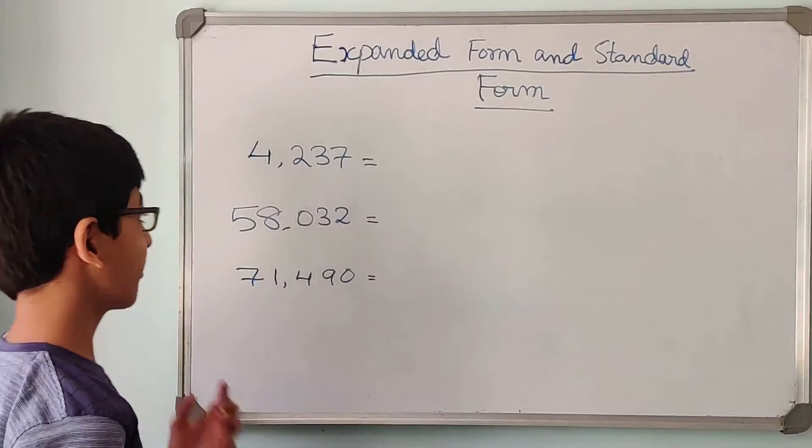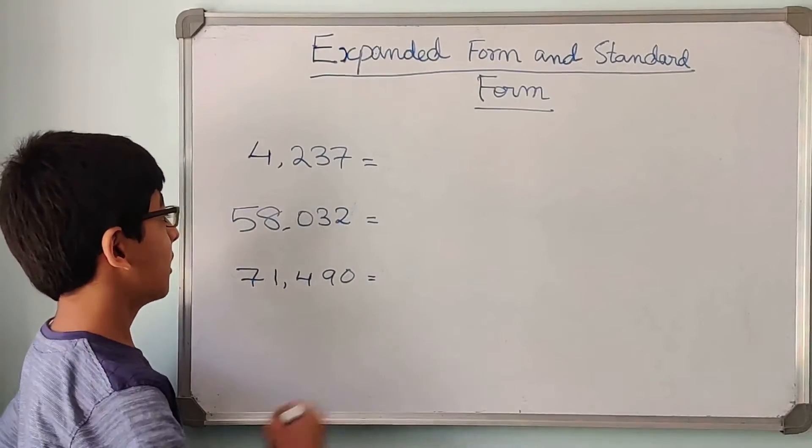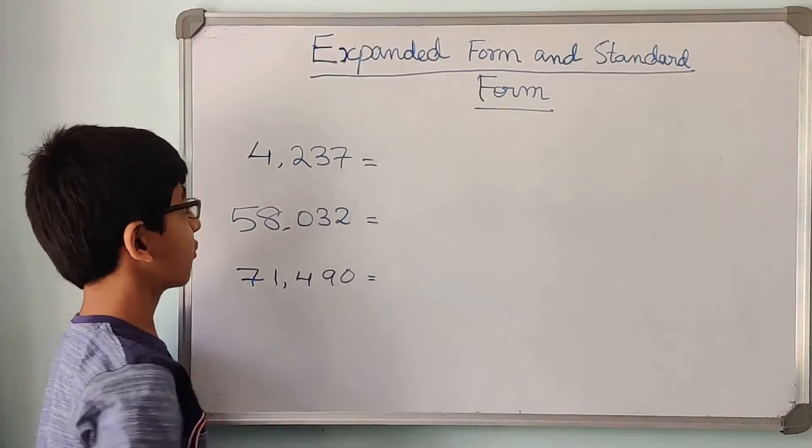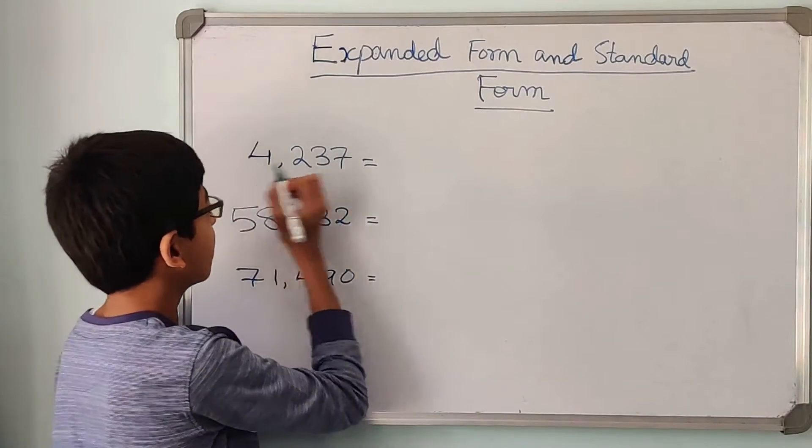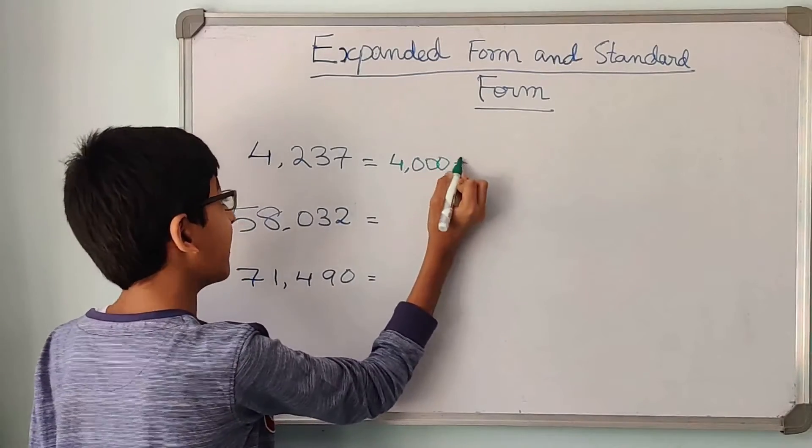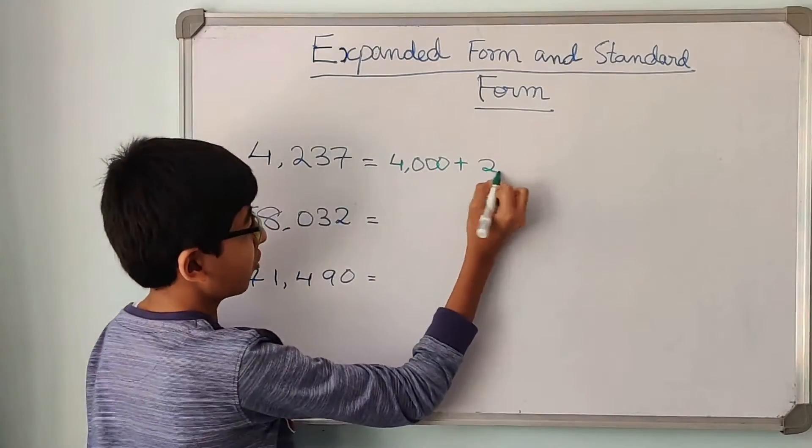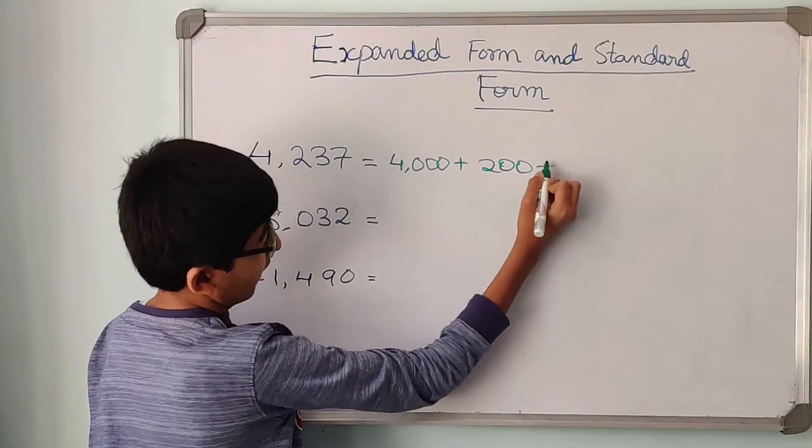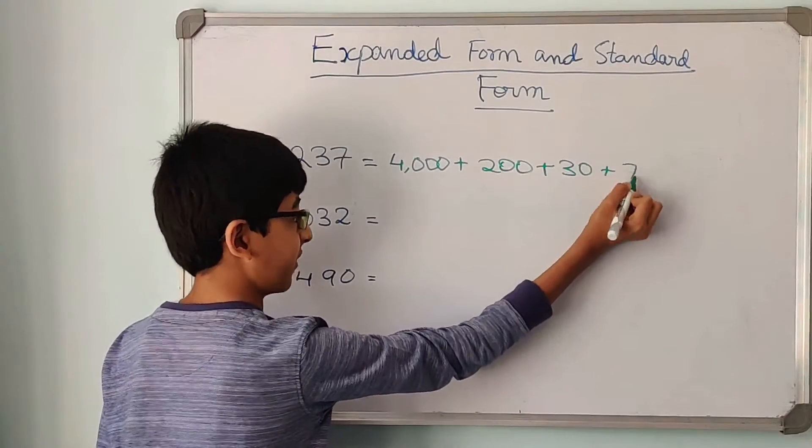So now let us try solving a few examples on the expanded form. So the first number given to us is 4237. So we will write the place value of 4. That is 4000 plus 2. So the place value of 2 on this number is 200 plus 30 plus 7.